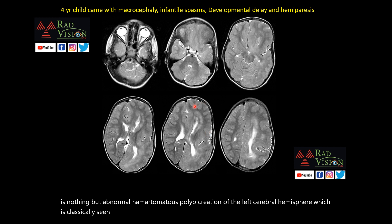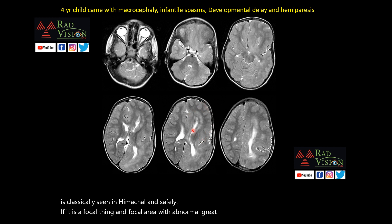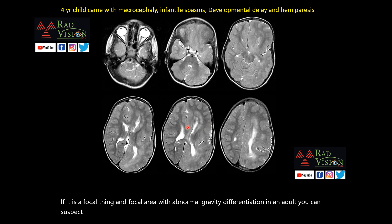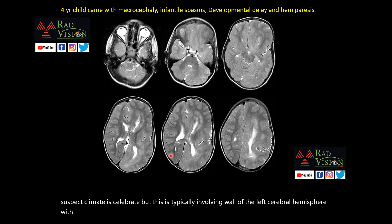If it were a focal area with abnormal grey matter differentiation in an adult, you could suspect gliomatosis cerebri. But this is typically involving the whole left cerebral hemisphere with displacement of the falx to the other side — a classical case of hemimegalencephaly.